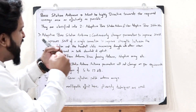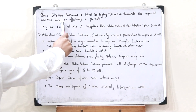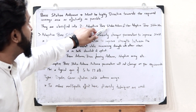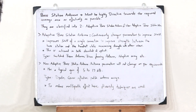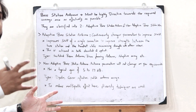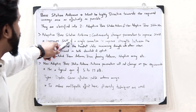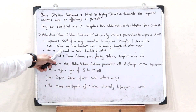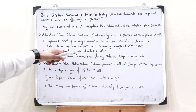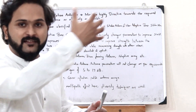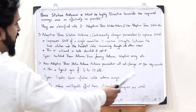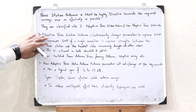A base station antenna must be highly directive towards the required coverage area. They are classified into two types. For an adaptive base station antenna, it continuously changes its parameters to improve the signal-to-noise ratio of a single connection — improving the strength between the base station and that particular handset while minimizing interference with other users. This is achieved in both the downlink and uplink connections. Different types of adaptive base station antennas include switched beam antennas, beamforming antennas, and adaptive array antennas.